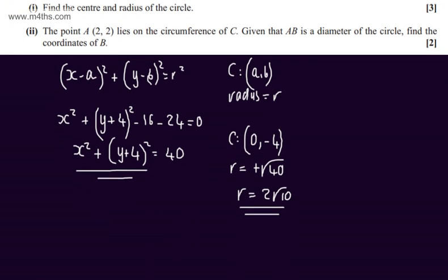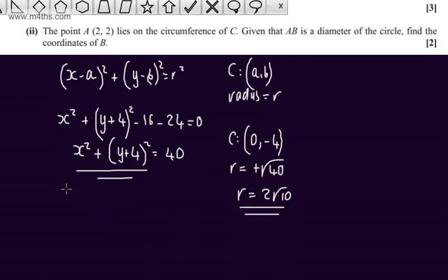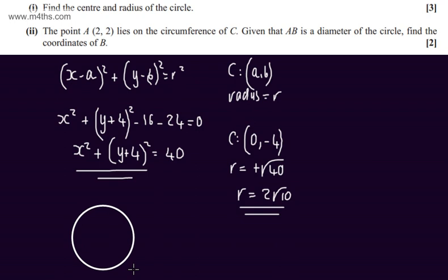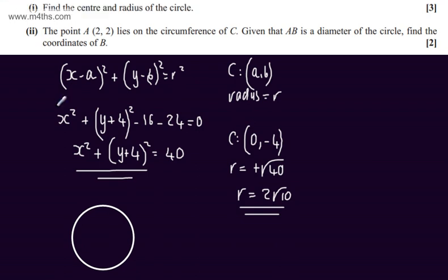If we draw a quick sketch, this question should be made relatively straightforward. We have the centre with coordinates 0 comma minus 4. I'm going to put point A just here at 2 comma 2, and then the other point B over here with coordinates x comma y.